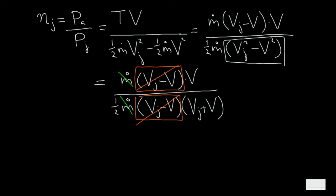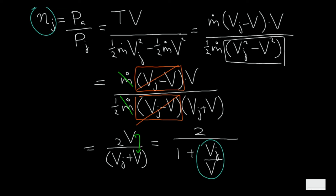So that greatly simplifies our equation because what we then get if we take the half and put it on the top we get 2v divided by vj plus v. And if I simplify this even a bit further and I try to move this v to the numerator or the denominator I should say, then we obtain the final result which is 2 divided by 1 plus vj divided by v. And thus our efficiency we started off with is only a function of the jet velocity and the airspeed of the aircraft.